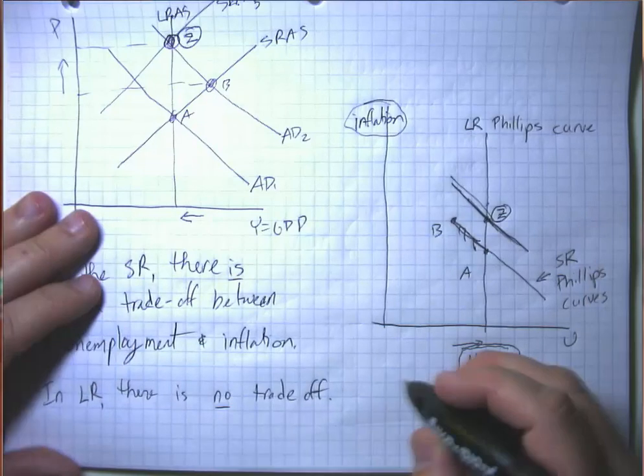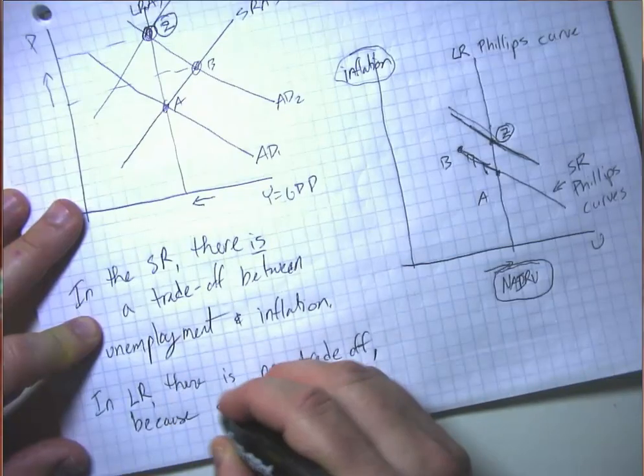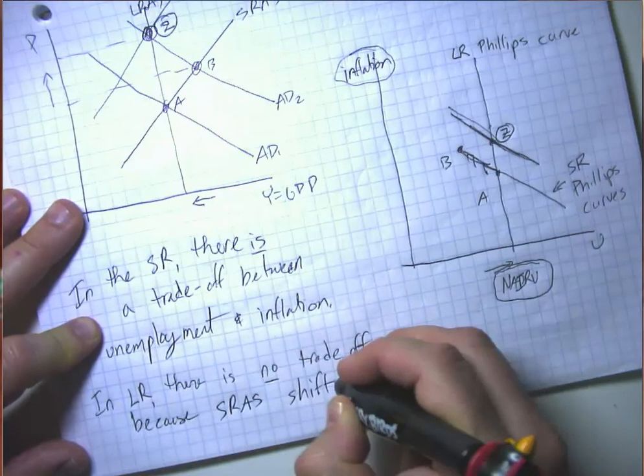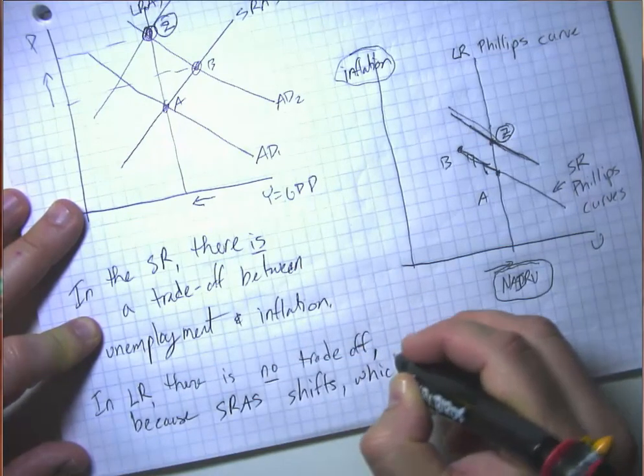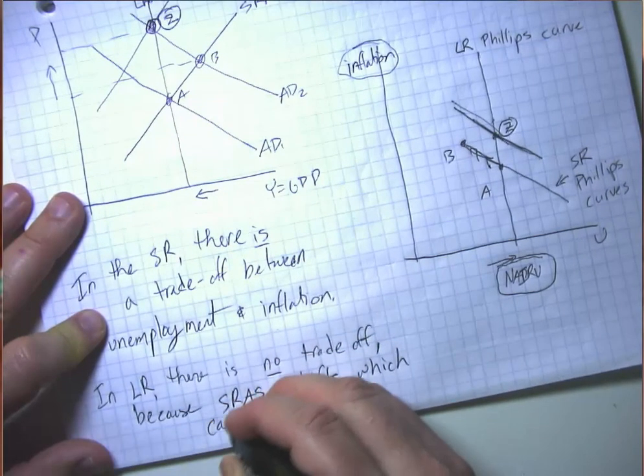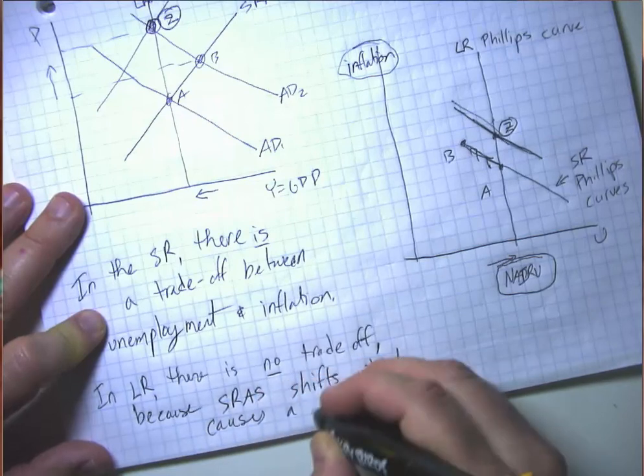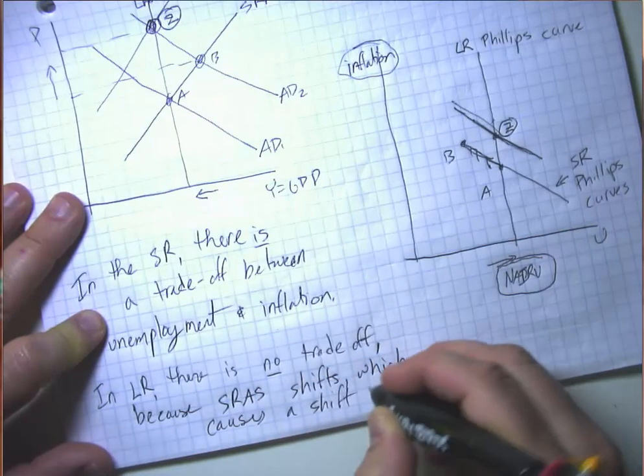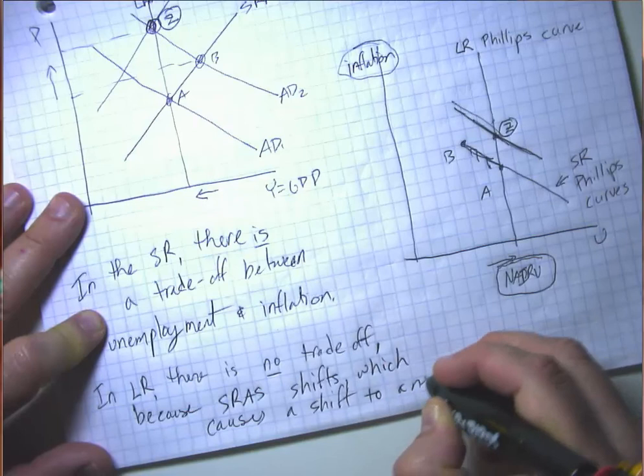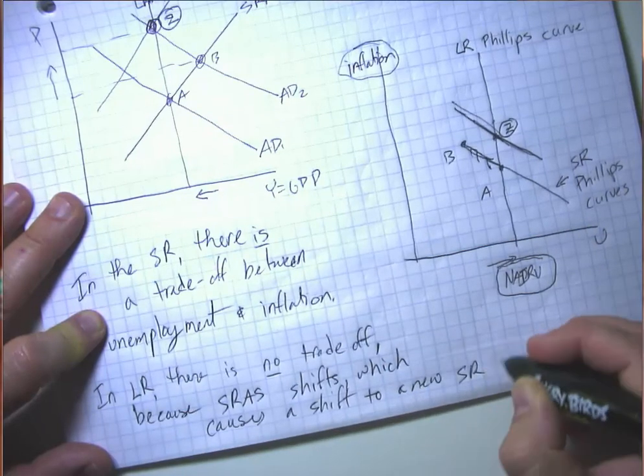So there is no trade-off because short run aggregate supply shifts, which causes a shift to a new short run Phillips curve.